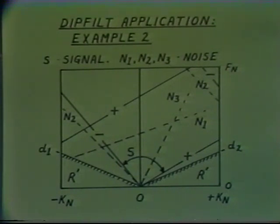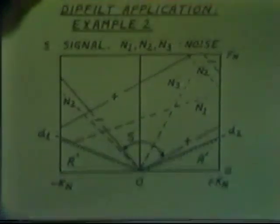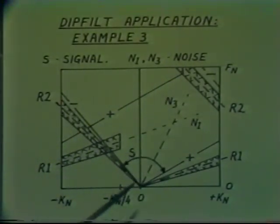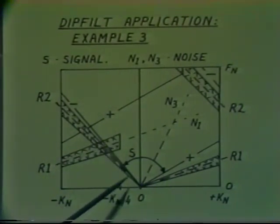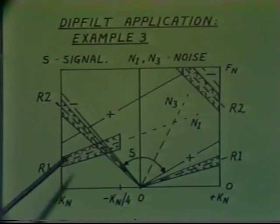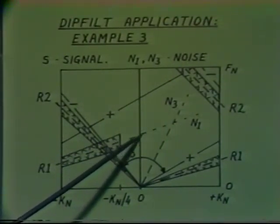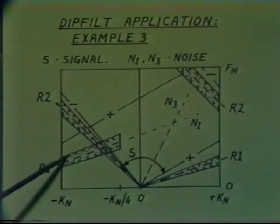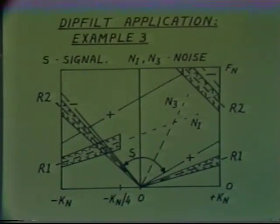One other method of attenuating noise in this example is by using R-DIP zones. If we specify two R-DIP zones, they can be positioned right over the N2 noise mode and the N1 noise mode. The N2 noise mode can be completely attenuated, and the N1 noise mode is attenuated where it aliases back. In simple situations with just two very strong noise modes, it may be possible to attenuate them with R-DIP zones rather than by the main pass and reject zones defined by the D1 and D2 parameters.